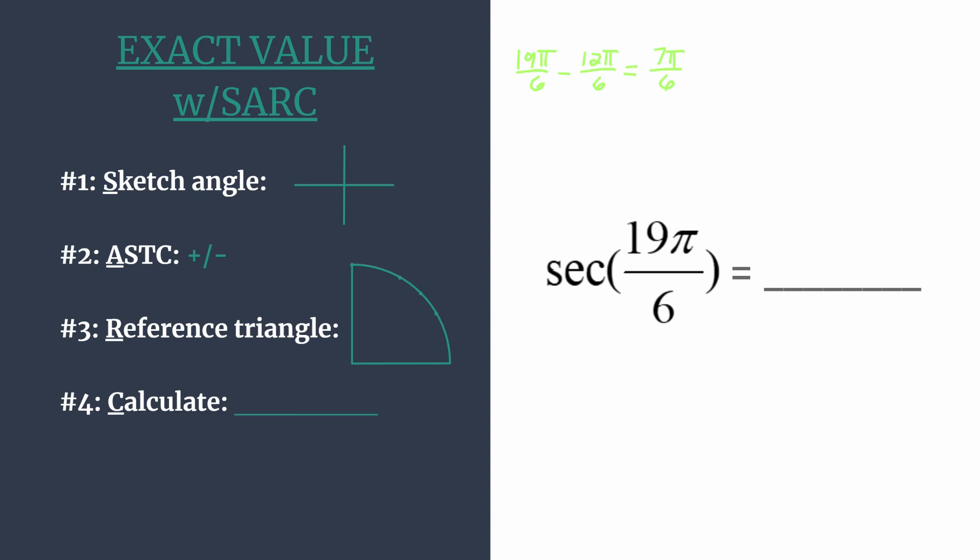If we sketch that terminal side, that's what we need. We have zero, rotating counterclockwise. A half rotation would be π, or 6π over 6. It's easy to see that 7π over 6 should be 1π over 6 past that. Here's the terminal side in quadrant 3.